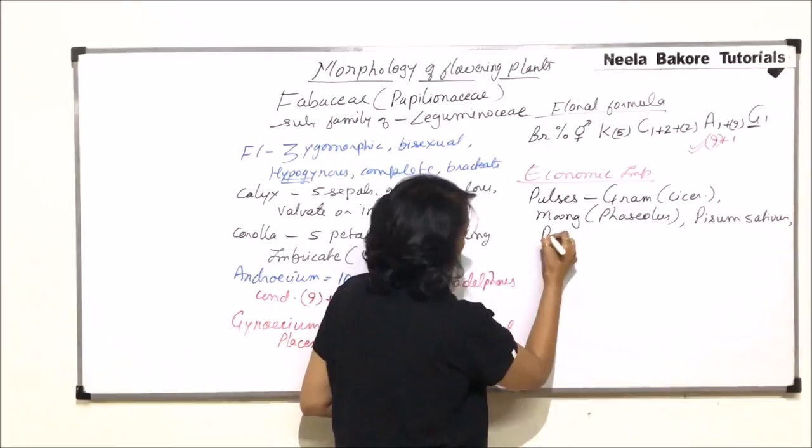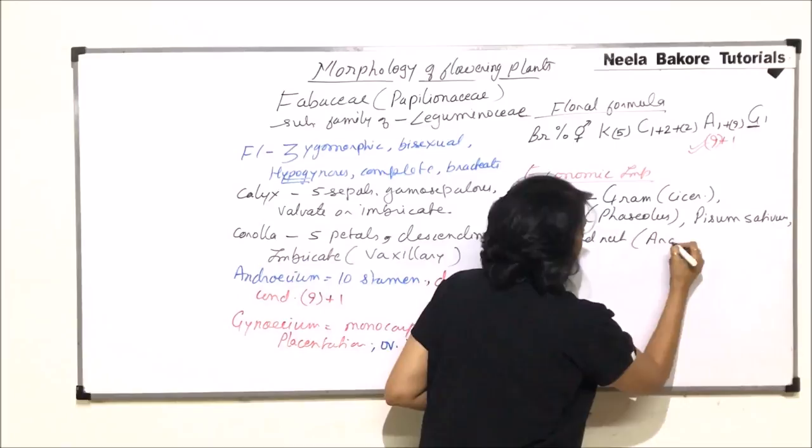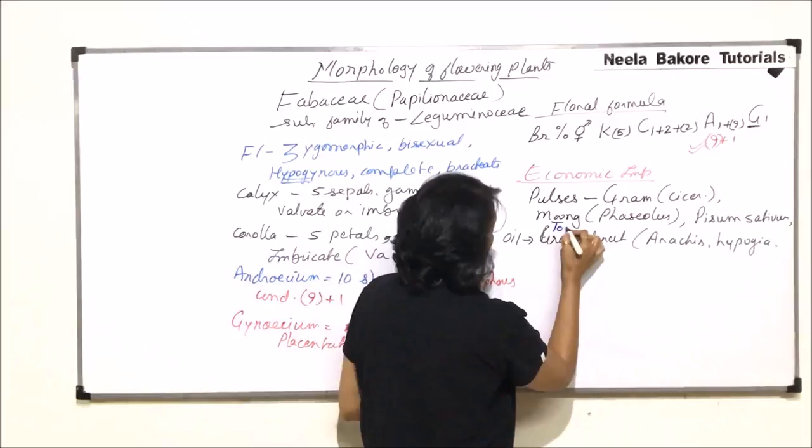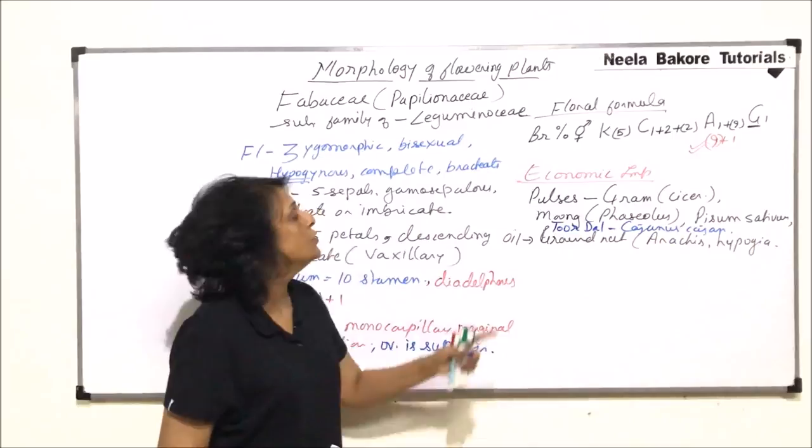Then gram is here, moong is here. Then we have groundnut. Now groundnut can be used to obtain oil. That is Arachis hypogaea. Amongst the pulses, we can include one more which is commonly known as tur dal. It is Cajanus cajan. So these are the pulses which we consume.